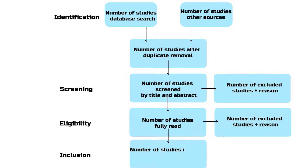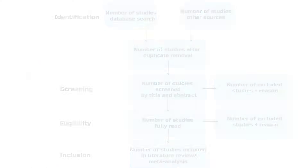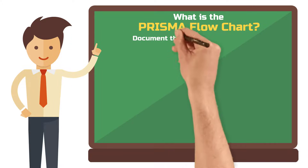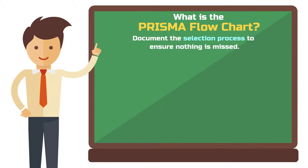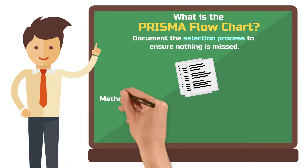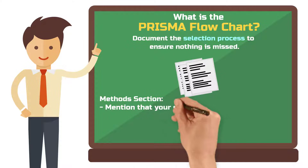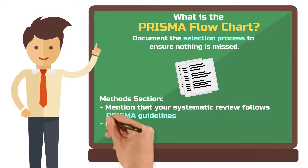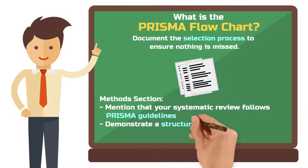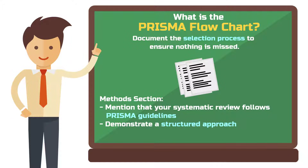And fourth, inclusion: the final group of studies that will be included in your literature review or meta-analysis remains. The PRISMA diagram helps you document the selection process clearly and ensures that nothing important is overlooked. In the methods section of your study, you should mention that your review followed the PRISMA guide, and then you provide your own flowchart with your own numbers. By explicitly mentioning PRISMA in the methods section, you ensure that readers recognize and appreciate the structured approach of your systematic review.